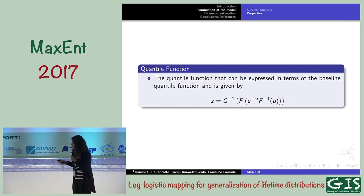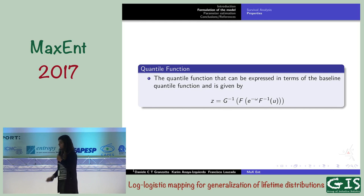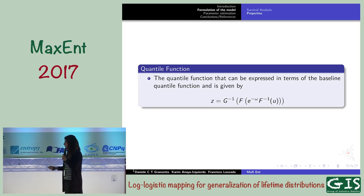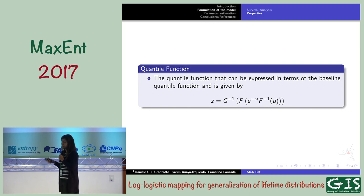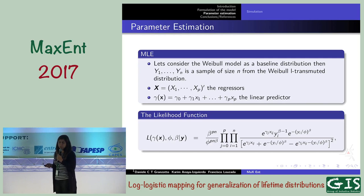Another property is that the quantile function for the L-transmuted distribution is defined in terms of the quantile function of the baseline model. This means it is straightforward to generate values from the L-transmuted model — if the baseline has an analytically expressible inverse CDF, it is easy to generate values from that distribution using the inverse method. This is the method we used to generate values for our numerical experiment.